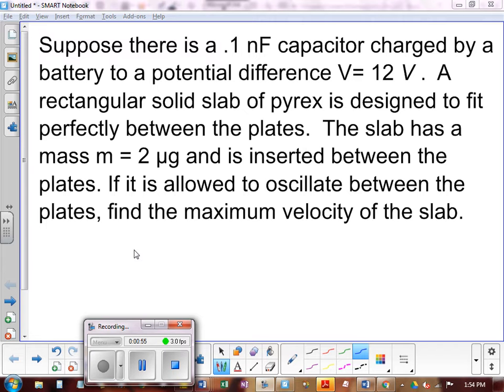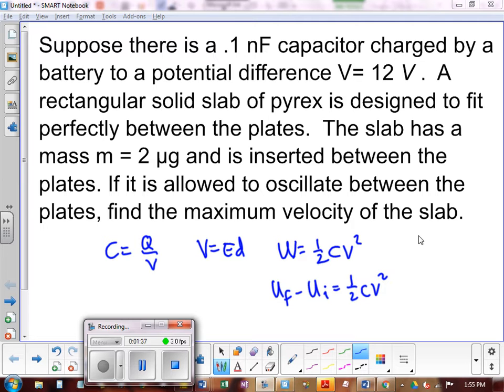So there is some lost energy, I guess you could say. So let's take a look at some of the formulas we have. We have, of course, C equals Q over V. We now have a new one that for parallel plates anyway, V equals Ed. We have work equals one half CV squared. I said that looks a lot like one half kx squared from the spring situation.